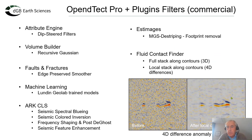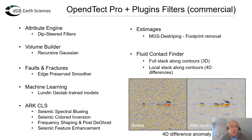Commercially, various filters are available, either in OpenDetect Pro or in different plugins. In the attribute engine we have the dip-steered plugins related to the dip-steering plugin. The volume builder has a Pro attribute filter called Recursive Gaussian Filtering, a smoothing filter — very fast, it's the fastest filter we probably have. And in faults and fractures, we have a very powerful edge-preserved smoother, which I will show later.